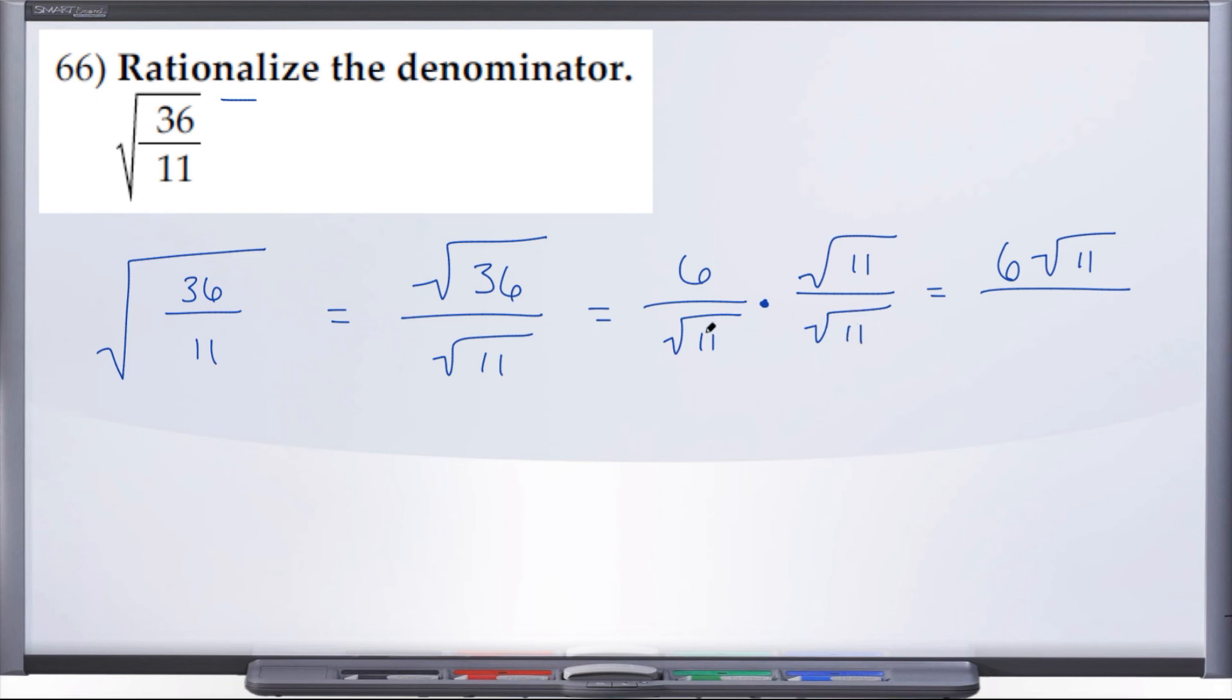When you multiply identical radicals, the radical signs go away and you're just left with whatever was originally under that radical. And so there we have the final answer for 66: 6 radical 11 over 11.